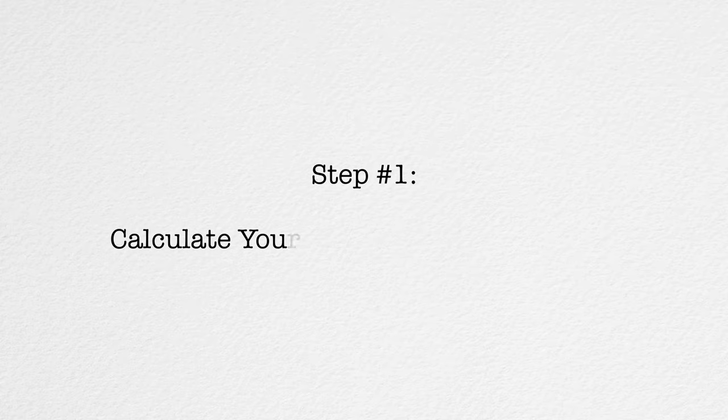Step number one: calculate your total cost of goods sold. As a refresher, your total cost of goods sold refers to how much food and drink you've sold within a certain accounting period. Depending on your restaurant, this could be on a weekly, bi-weekly, or monthly basis. Based on your accounting period, you're going to plug in specific inventory values into the cost of goods sold formula.